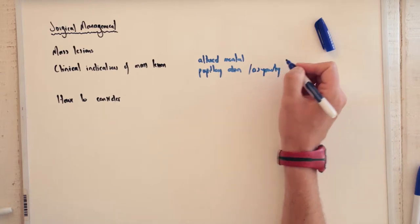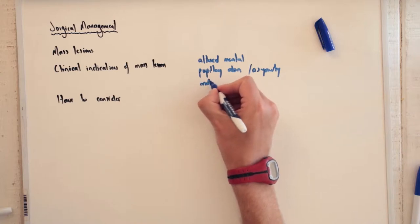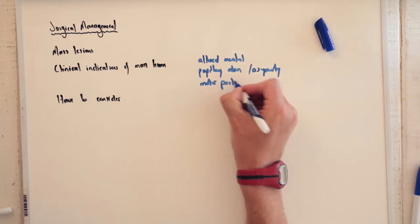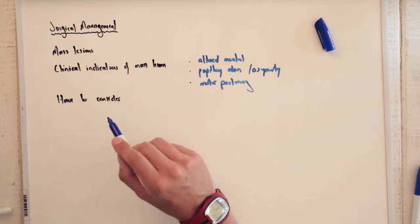And then lastly, people with abnormal flexion or extension or motor posturing. These will be gross clinical signs that there is a mass lesion.